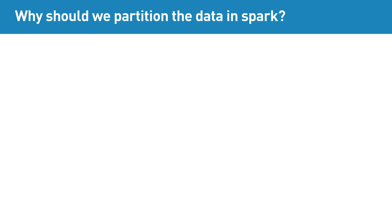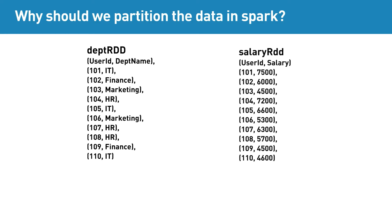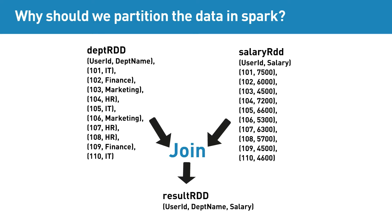Say an RDD called DepartmentRDD with UserID and DepartmentName pairs that have the following 10 elements. Say another RDD called SalaryRDD with UserID and Salary pairs also has 10 elements. Now we need to join these two RDDs using Spark's join operation to get all three values: UserID, DepartmentName, and Salary.